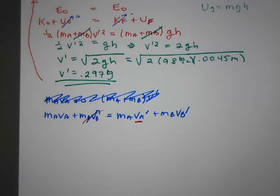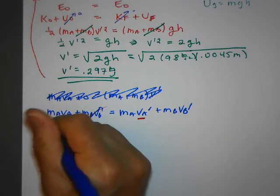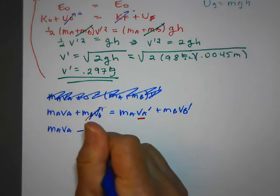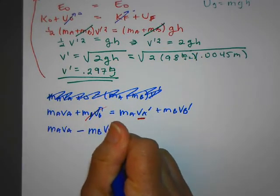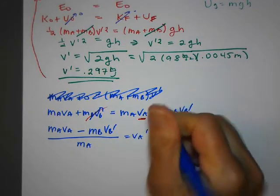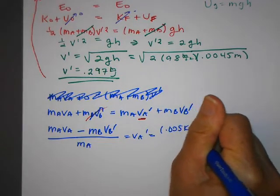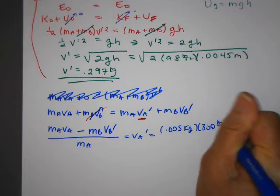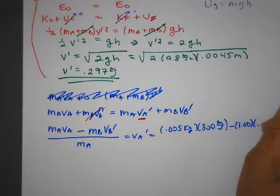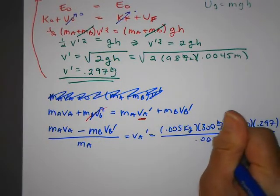Okay, so when I rearrange that, I want to solve for this. So I'll move this on the other side. I'll have (MA·VA - MB·VB prime) over MA is equal to VA prime. So now I'm going to have 0.005 times 300 minus 1 times 0.297 divided by 0.005.